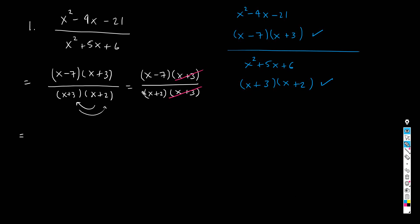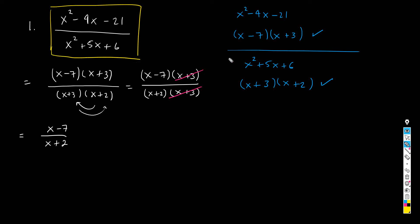After canceling (x+3), I end up with just (x-7) over (x+2). So in the end, the original fraction, after performing the process of simplification, is equal to (x-7)/(x+2). This is the simplified version of the fraction.